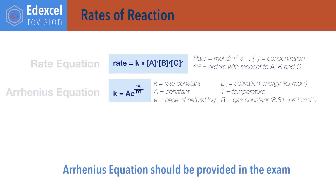K equals A times e to the power minus Ea over RT. This is the Arrhenius equation, where K is the rate constant, A is the Arrhenius constant or pre-exponential factor, e is Euler's number — a mathematical constant — Ea is activation energy with units of kilojoules per mole, R is the universal gas constant — 8.31 joules per kelvin per mole — and T is temperature in kelvin. The Arrhenius equation can also be given in the form: ln K equals minus Ea over RT plus ln A, where ln is natural logarithm.